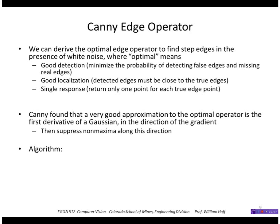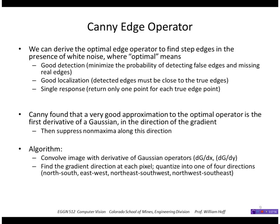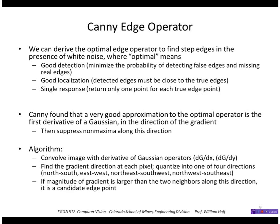The Canny algorithm works as follows: convolve the image with the derivative of the Gaussian in x and y, find the gradient direction at each pixel, and quantize it into one of four directions — north-south, east-west, northeast-southwest, or northwest-southeast. Then, if the magnitude of the gradient is larger than the two neighbors along that direction, it is marked as an edge point.